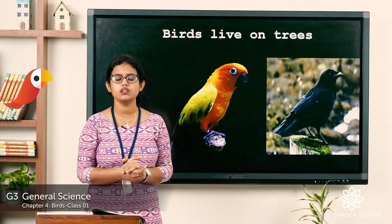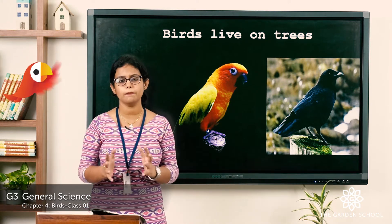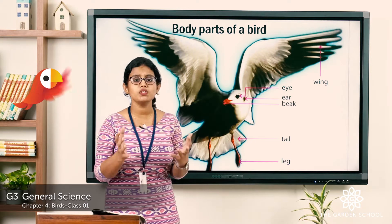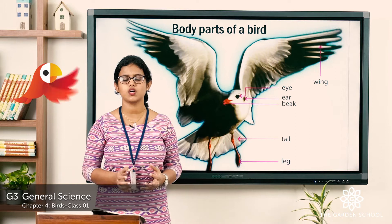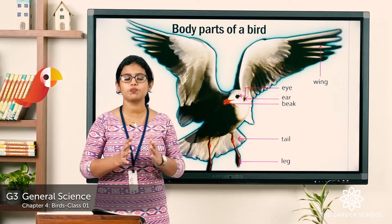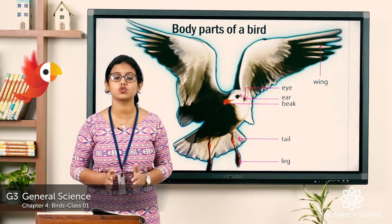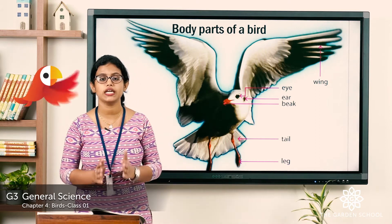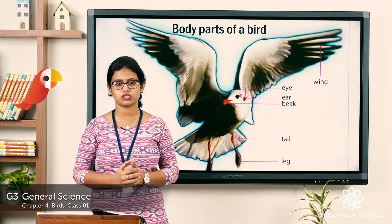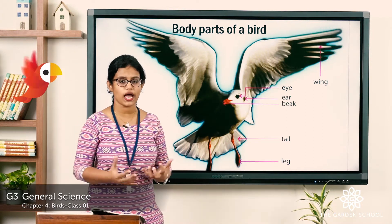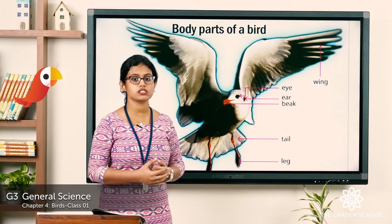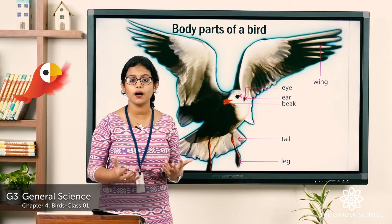Now let's see the body parts of a bird. Like human beings, these birds also have different body parts and each part of their body is very important. Each part of their body has some functions. These birds have two eyes, two feet, two wings, a tail, and a beak.